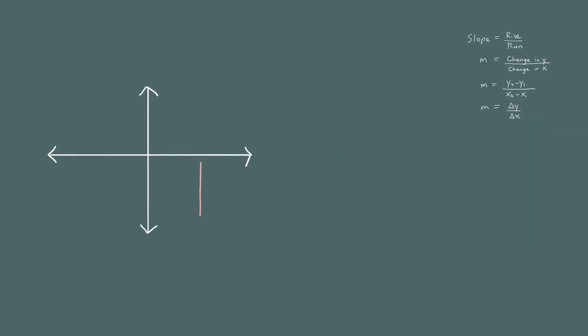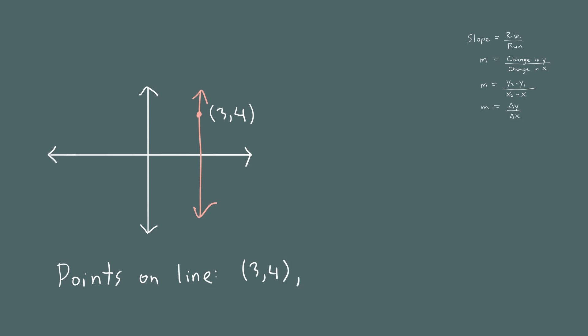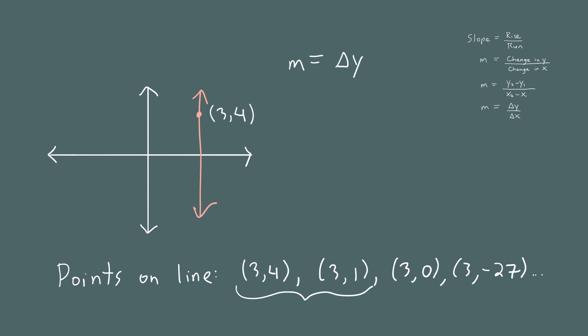Finally, let's look at a vertical line that goes through the point (3, 4). Since I've given you one point and the line is vertical, any point with an x coordinate of 3 will also be on this line. So (3, 1), (3, 0), and (3, -27) are all on the line. Let's use the first two points, (3, 4) and (3, 1), to do the calculation.